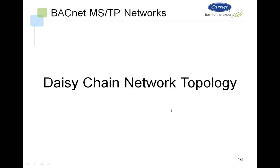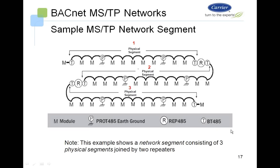Looking at daisy-chain network topology with a sample MSTP network: this is one MSTP network made up of three physical segments. Each physical segment is up to 31 nodes or 2,000 feet, and always starts and ends with a terminating resistor. We have these modules, terminating resistors, and protection boards.